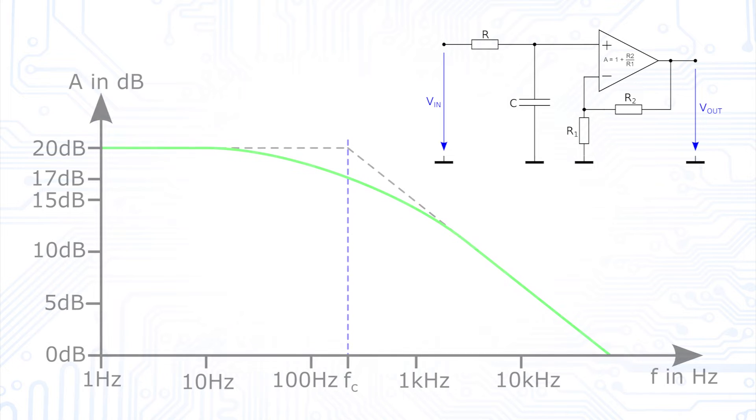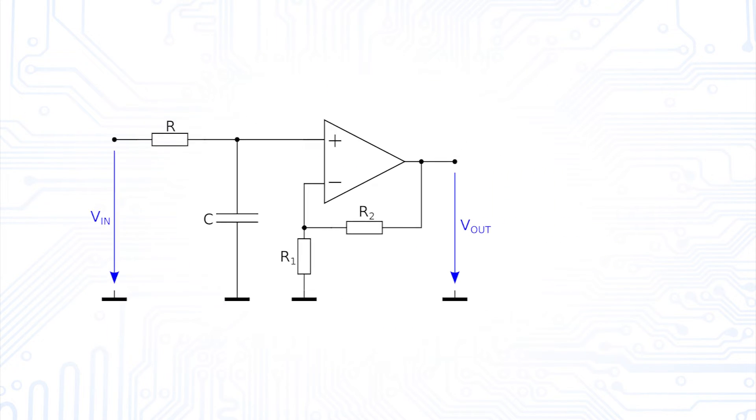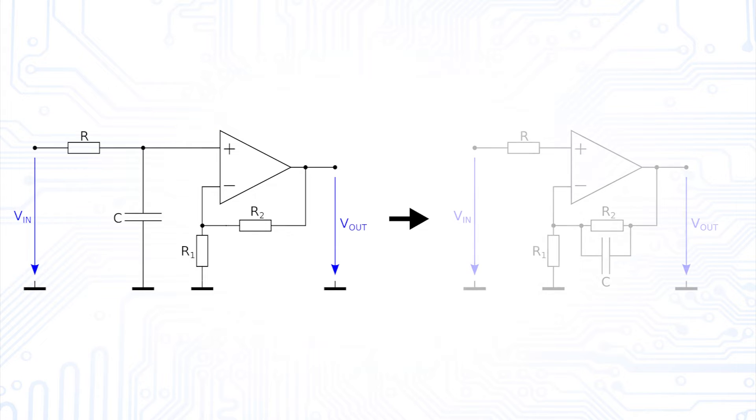Let's look at the Bode plot to see how our circuit behaves now. We can see that frequencies below the cutoff frequency are amplified with the gain set by the two resistors. As soon as the cutoff frequency is reached, we see an attenuation of minus 20 dB per decade, as we would expect from a first-order filter. To simplify the circuit a bit more, we can combine the RC element and the non-inverting amplifier, which makes the circuit less sensitive to external impedances at its input.